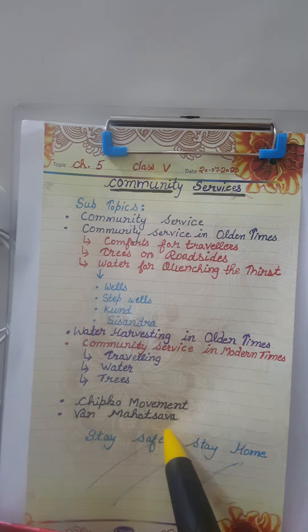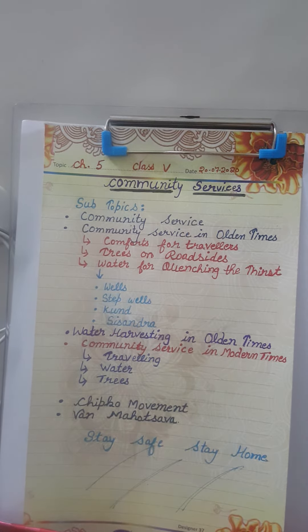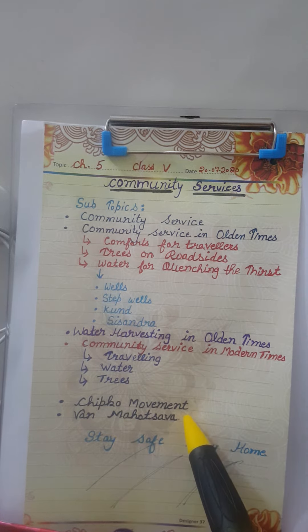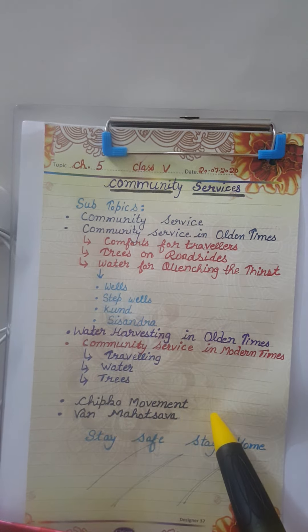Next is Van Mahotsav. Van Mahotsav is celebrated by planting trees in the first week of July every year. It is a festival of tree planting.